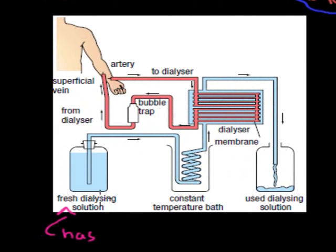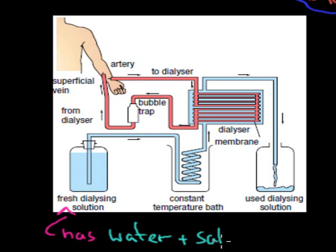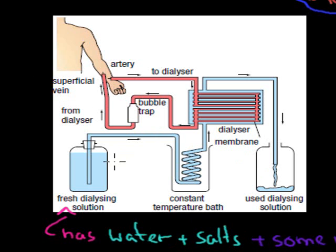Let's talk about the fresh dialysis solution. What is actually in it? It mostly has water, salts, and some nutrients — I'll talk about why it has nutrients in a second. So the main ingredients are water, salt, and usually some nutrients, meaning amino acids and glucose and that sort of thing. What it doesn't have is urea — it has no urea — and it also has no drugs in it either.